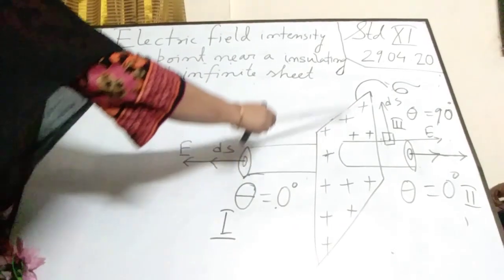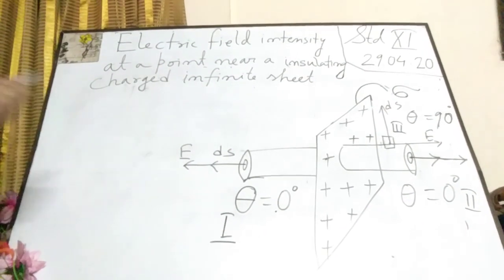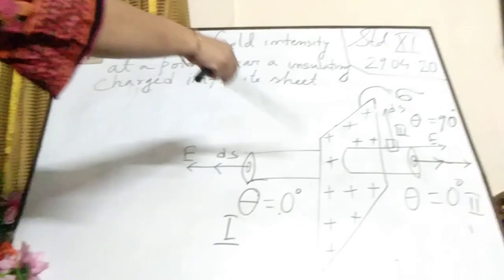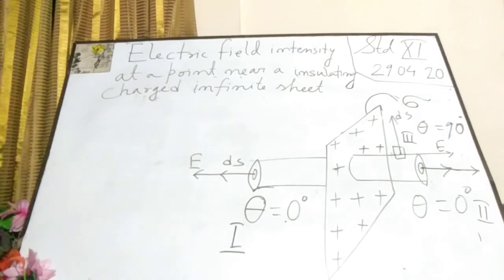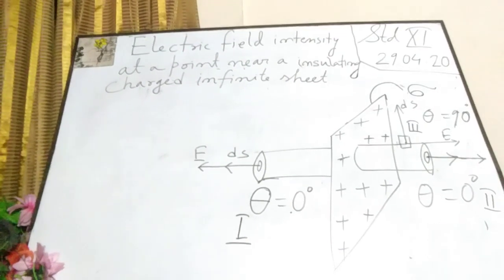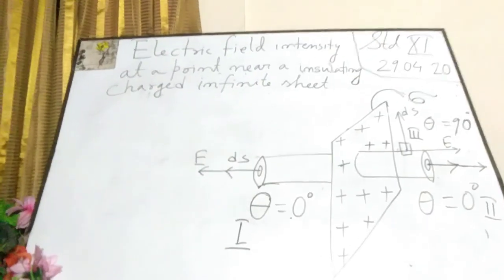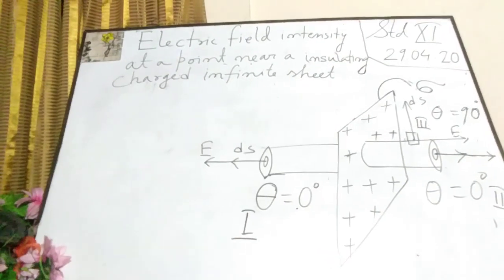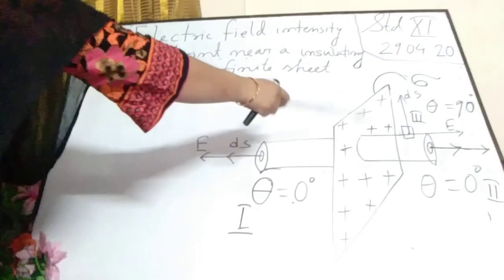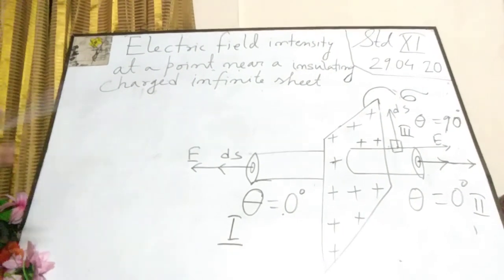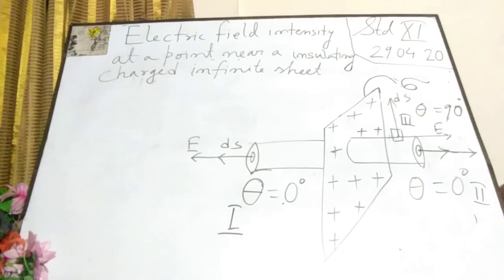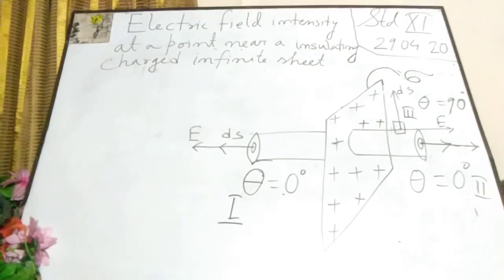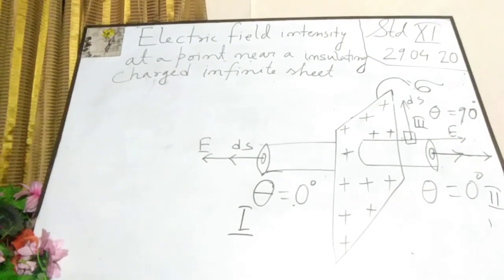Here is an infinite sheet of insulating material and some positive charges are distributed on its surface. You have to remember one point: if I distribute some charge on an insulating sheet, the charge will reside on both sides of the sheet. That means you are seeing the frontal part of the sheet — some charges will be distributed there, and in the backward portion also, some charges will be distributed. We have to find out the electric field intensity at a point very near to the sheet.